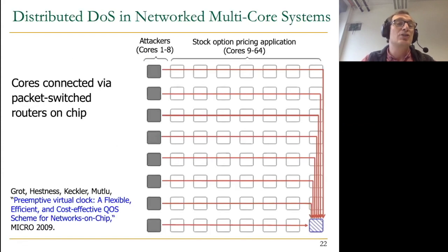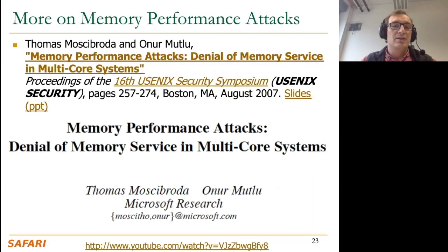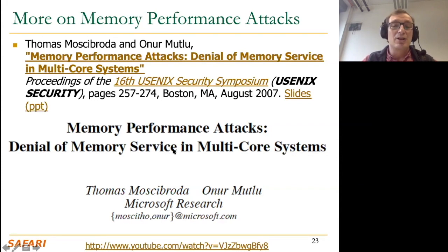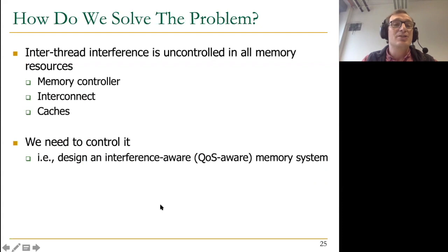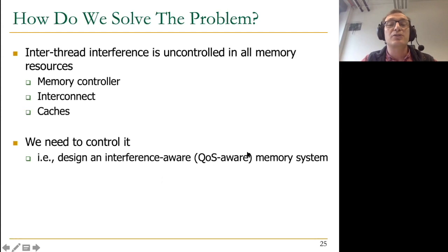You can also distribute a denial of service in network-on-chip based systems that are the next step in the evolution of multi-core engines. So the key question is how do we solve this problem? Inter-thread interference is uncontrolled in all memory resources — memory controllers, interconnects, and caches — though it's getting better today. The question is how do we control it? Basically, we want to design an interference-aware or quality-of-service-aware memory system. There are many high-level challenges to designing such a system.